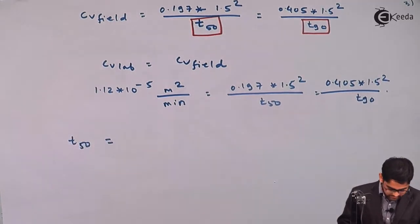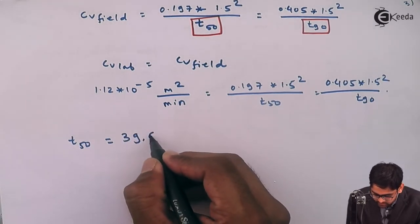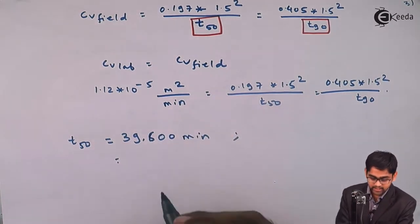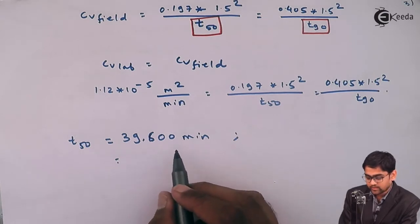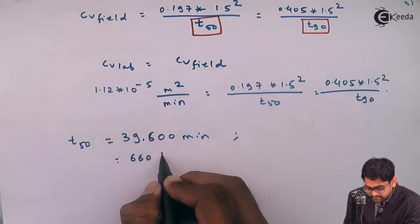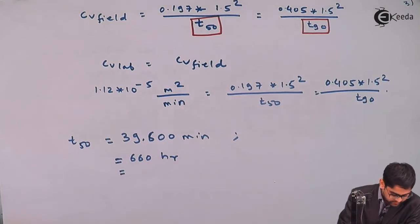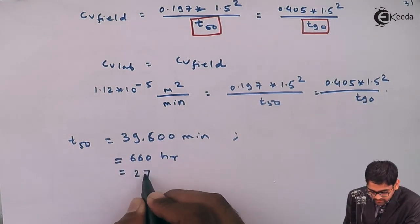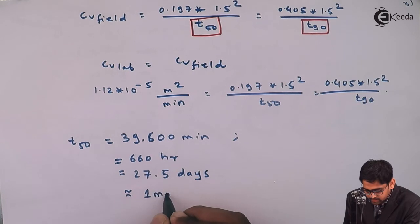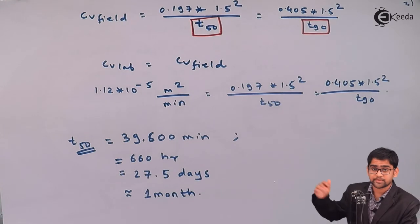Solving, we get T-50 equal to 39,600 minutes. Converting: 39,600 ÷ 60 = 660 hours. And 660 ÷ 24 = 27.5 days — meaning it will take nearly one month for the field clay layer to consolidate up to 50% of its ultimate settlement.